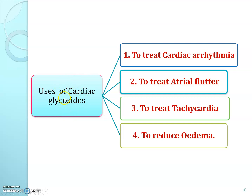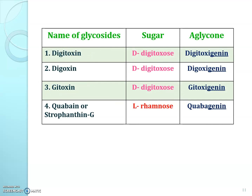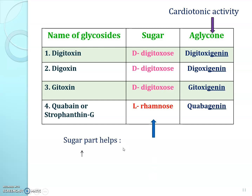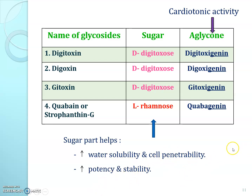Cardiac glycosides occur naturally in plants and stimulate the heart muscles, hence they are used to treat CHF, that is congestive heart failure. Examples of cardiac glycosides are digitoxin, digoxin, gitoxin, and ouabain, also known as strophanthin. Their hydrolysis products are a sugar part and an aglycone part. The aglycone part has cardiac activity, while the sugar part increases water solubility, cell penetrability, potency, and stability of the drug, and also decreases its toxicity.